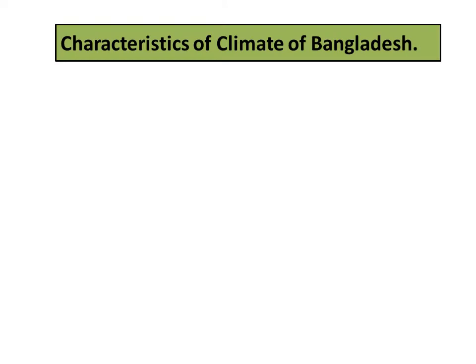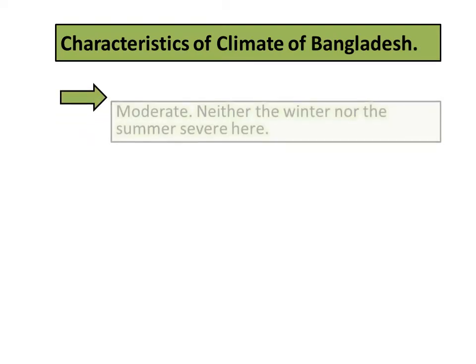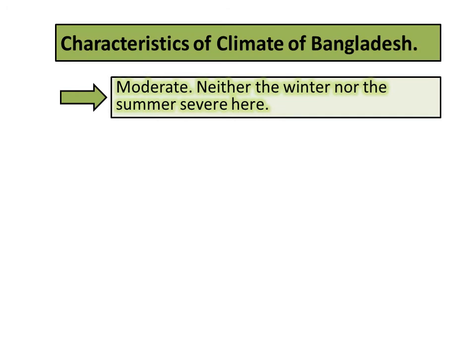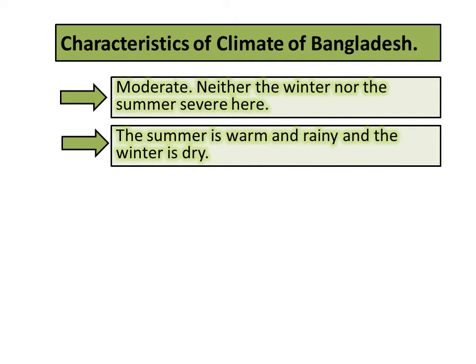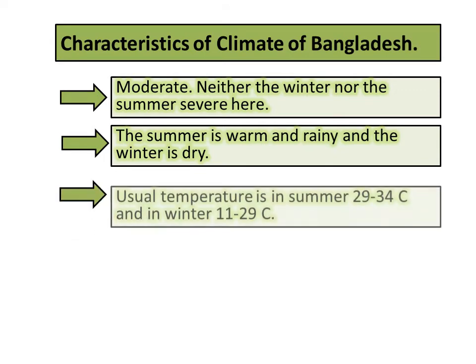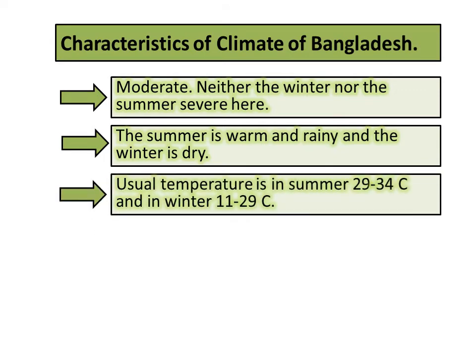Here are some characteristics of the climate of Bangladesh. We have already learned that Bangladesh has a tropical monsoon climate. Its characteristics are: the climate of Bangladesh is moderate, meaning neither winter nor summer is severe here. The summer is warm and rainy, and the winter is dry. The usual temperature of Bangladesh is 29 to 34 degrees Celsius in summer, and 11 to 29 degrees Celsius in winter.